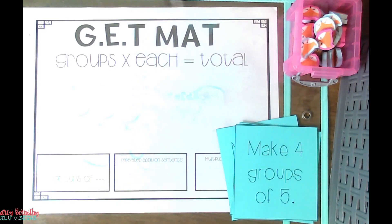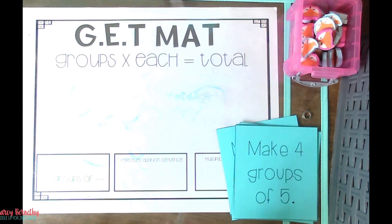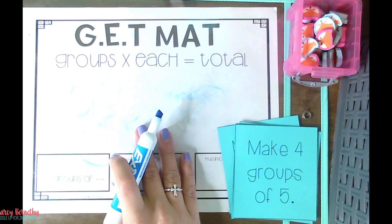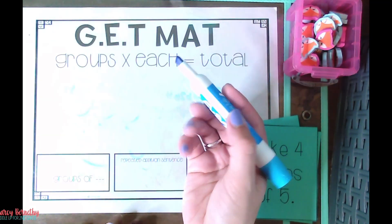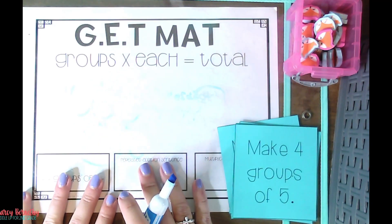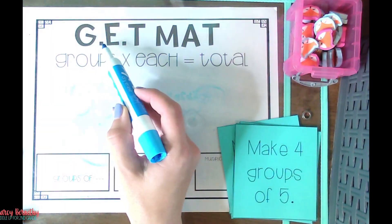Stick with me — I'm going to share that at the end of this video. But let's take a look at an example of how you would introduce and teach the GET strategy to your students. When first introducing this strategy, I would really focus on what GET stands for. I'm going to show you using this work mat, but you do not have to have this work mat in order to use this strategy. I always would have my kids pull out a dry erase marker and write on their desks, or use a whiteboard or their math journal.